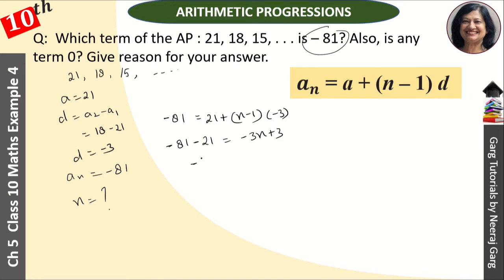This becomes minus 102 = minus 3n plus 3. Taking 3 to the other side: minus 102 minus 3 = minus 3n. Minus 105 divided by minus 3 = n. Minus cancels with minus, and 3 divides to give 35.